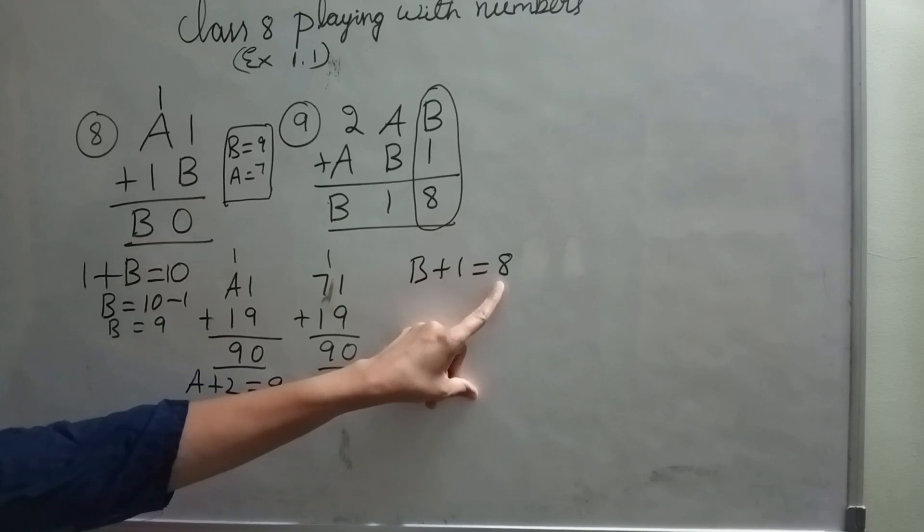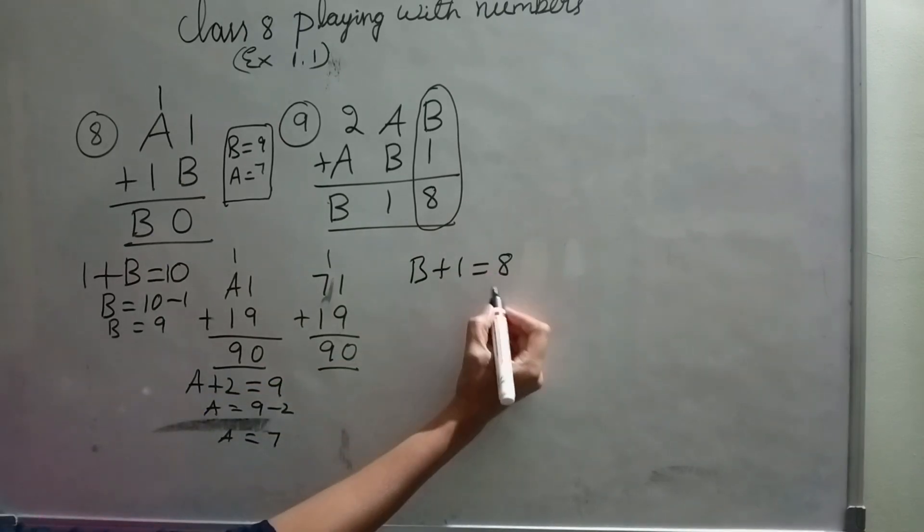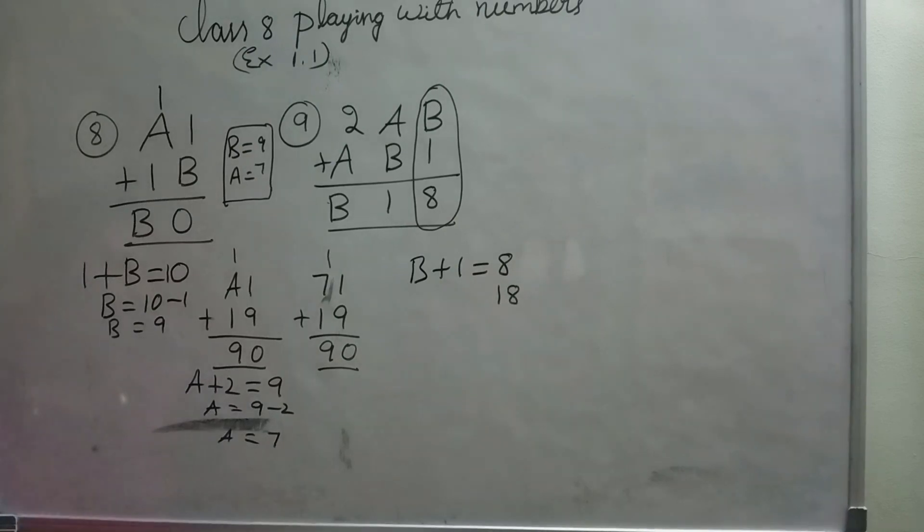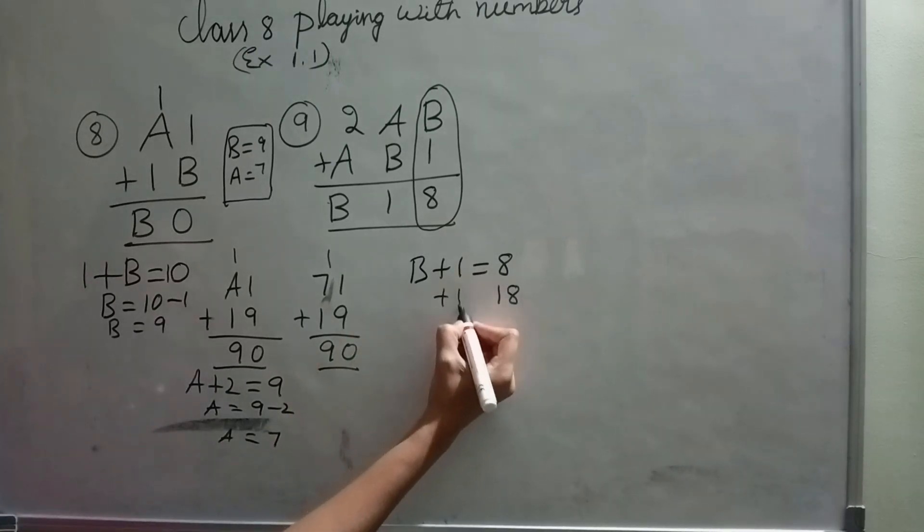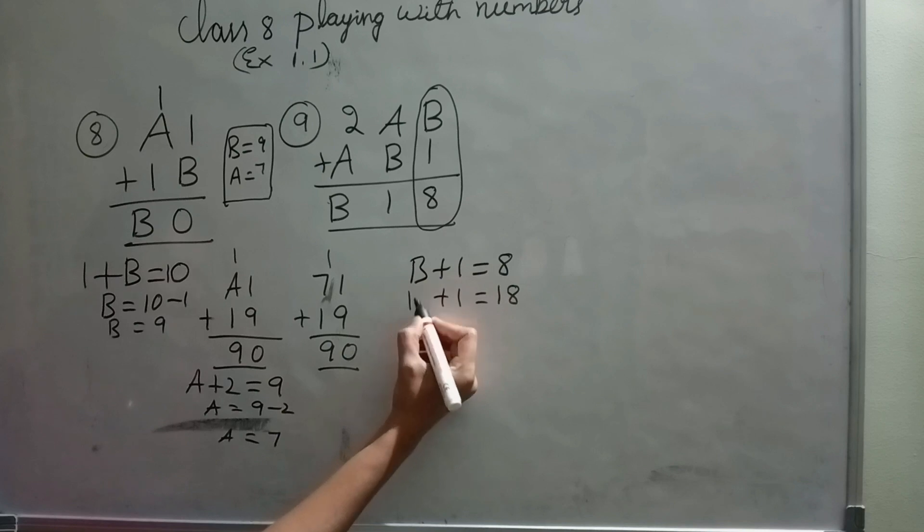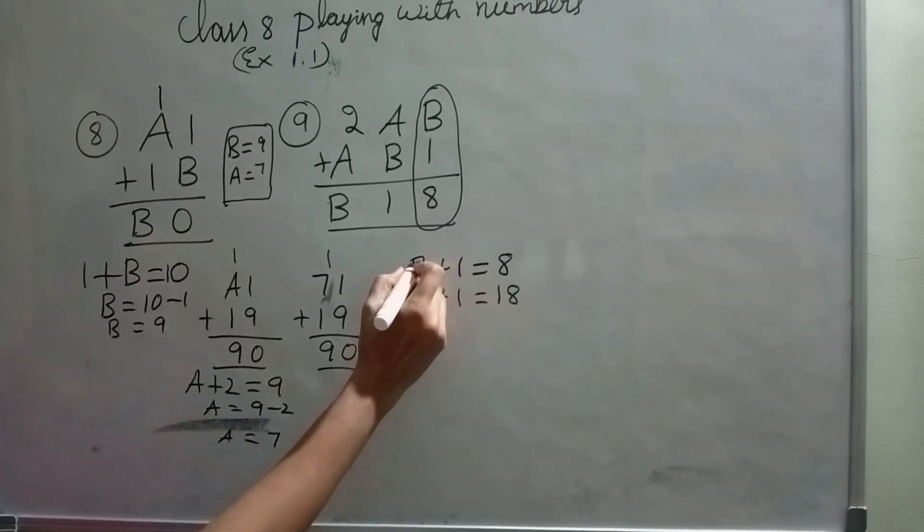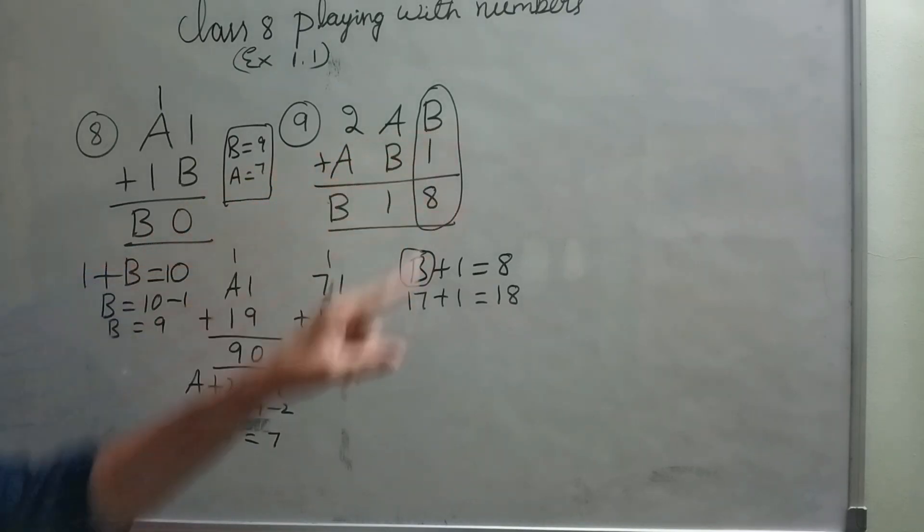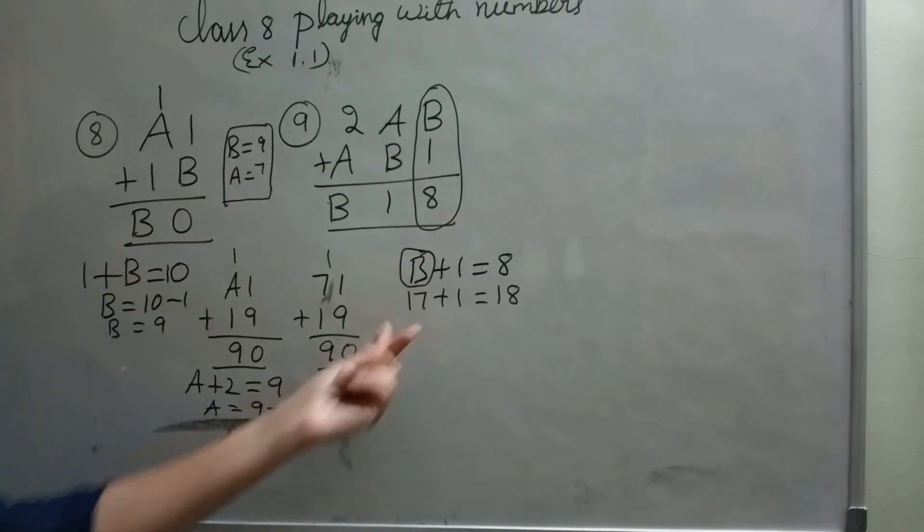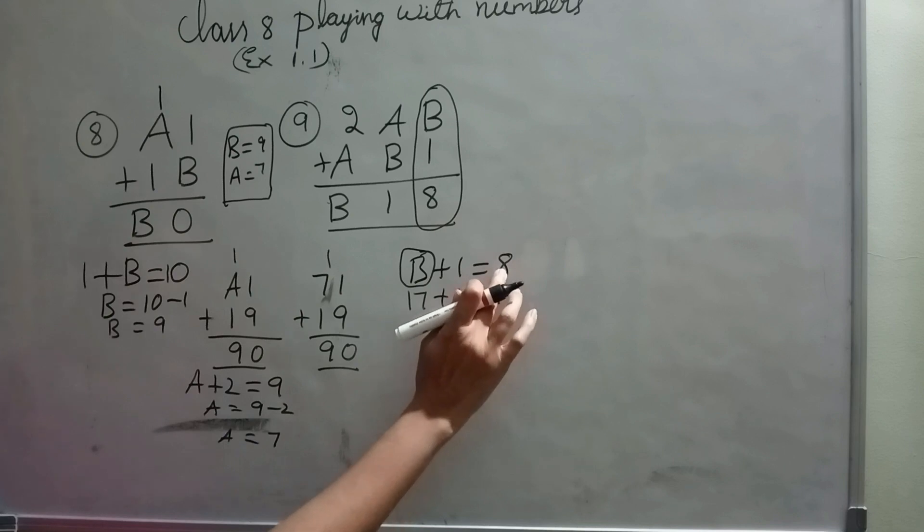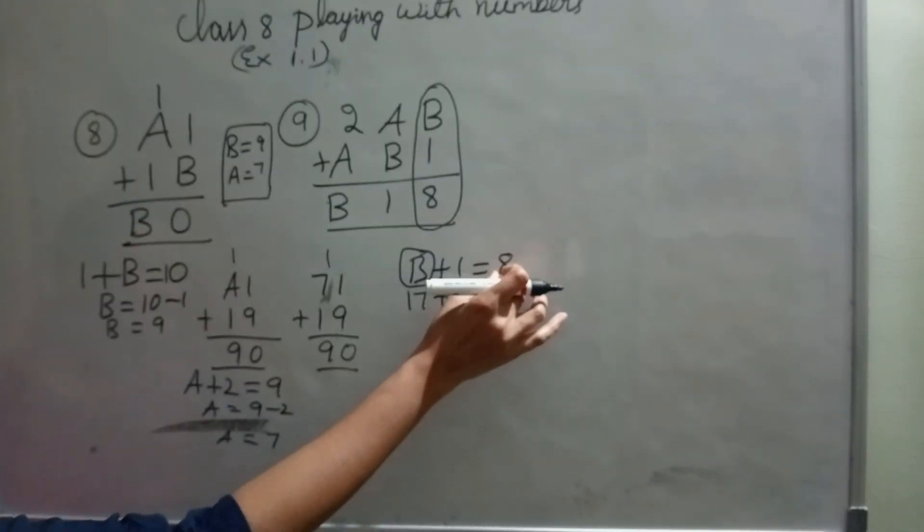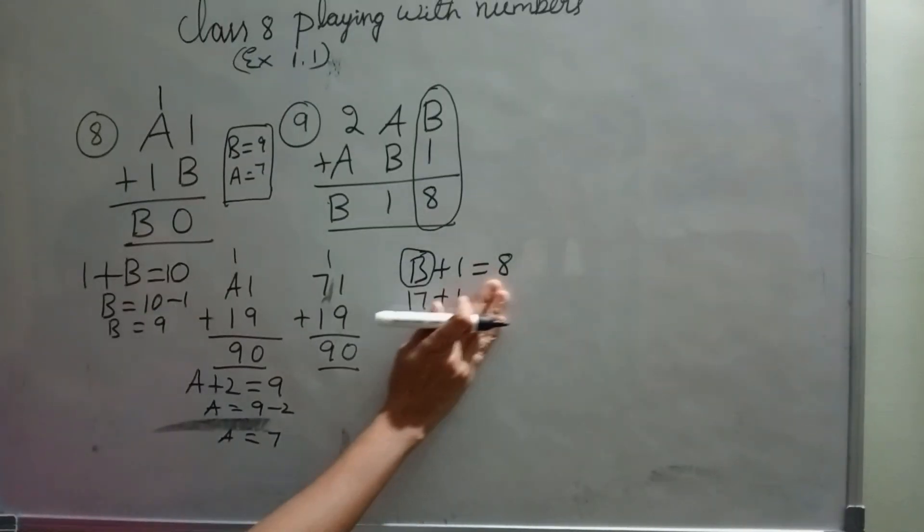if it is 18, already I am having 1. I should add 17 here. 17 plus 1 is 18. But B is a single digit number. So I can't take 17. So here it is 8 only. 18 is not possible.